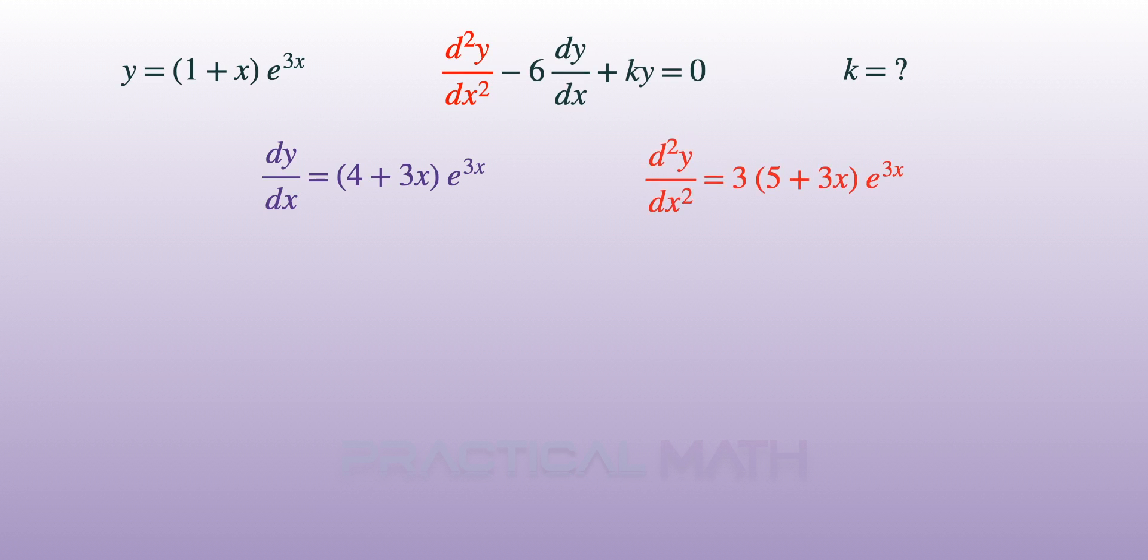We'll now swap out the second derivative found earlier and subtract away 6 times the first derivative. Then, we add ky after replacing y to be 1 plus x times e to the power of 3x and then equating it to 0.